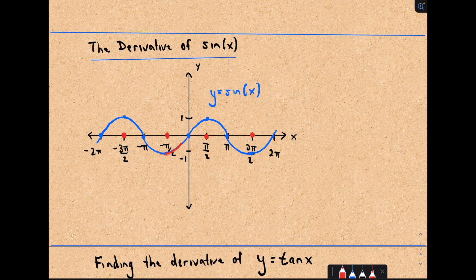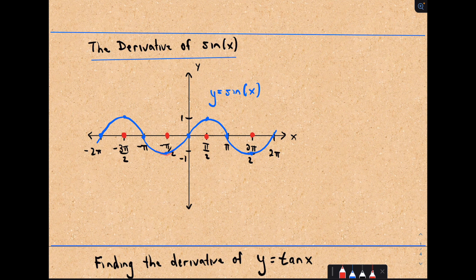Let's look at the section between negative π/2 and positive π/2. Over that interval, the function is increasing, and any tangent line through there is going to have a positive slope. It looks like the tangent line would be steepest right at x = 0. So that's where we get the largest y-value on the derivative graph, because the derivative graph tells you the slope of the tangent line. The slopes are all positive, getting steeper and steeper until we hit x = 0.